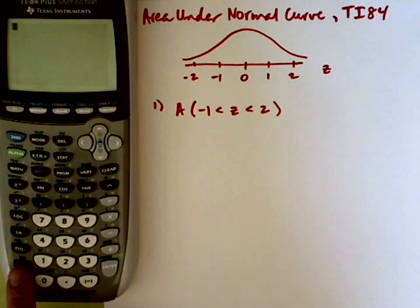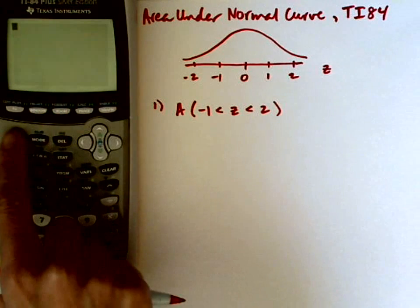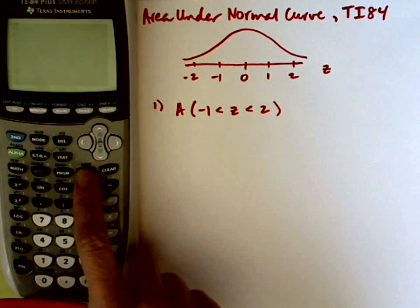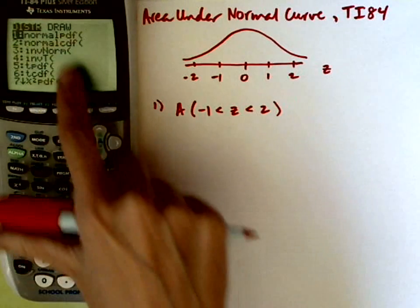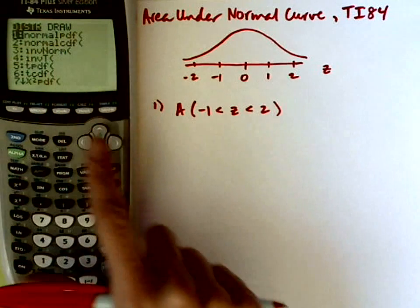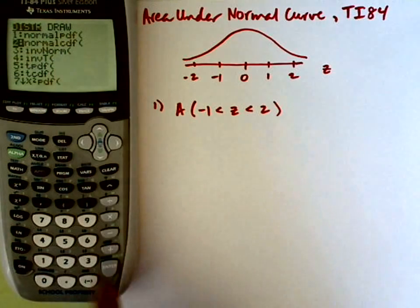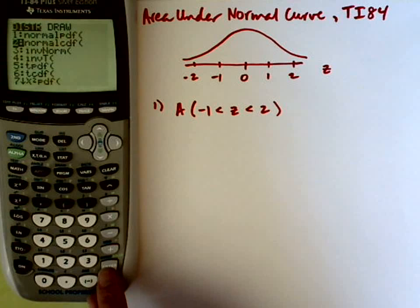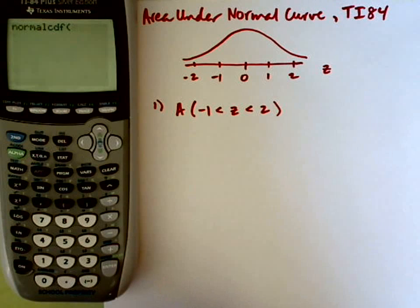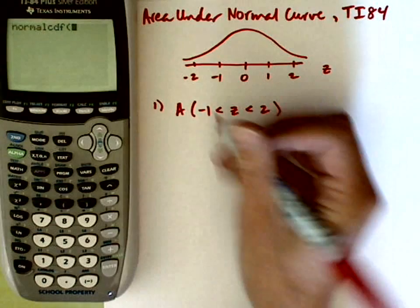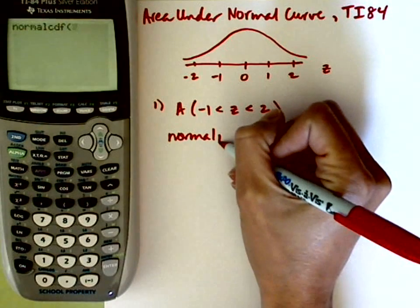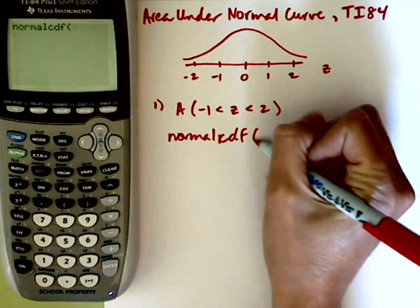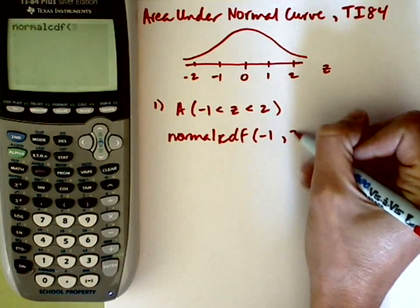So I've got my calculator turned on. I'm going to choose the distribution menu, so second followed by the distribution menu, and I'm going to choose normal CDF. This gives me a cumulative distribution frequency, which means that it's adding the areas. So I choose number 2. What it's looking for are the leftmost z-score, comma the rightmost z-score. So for ours, we're going to plug in negative 1, comma 2.